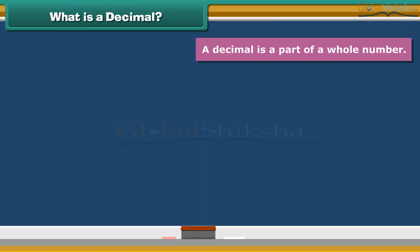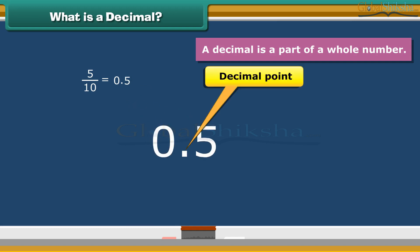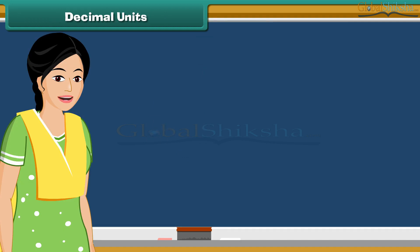Basically, a decimal is a part of a whole number. Look, the fraction 5 by 10 could be written as 0.5. You can easily identify a decimal by looking at the decimal point. To understand decimals, we need to learn about place value first.